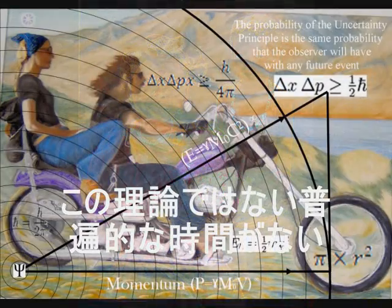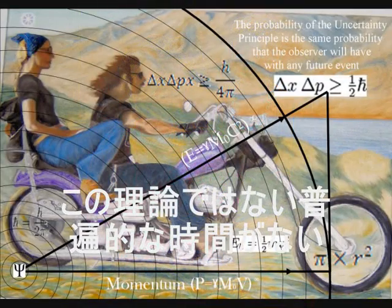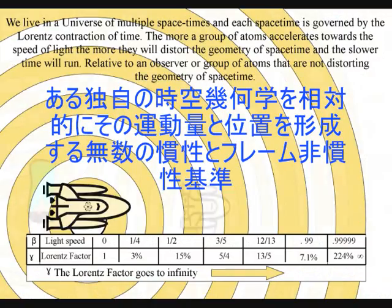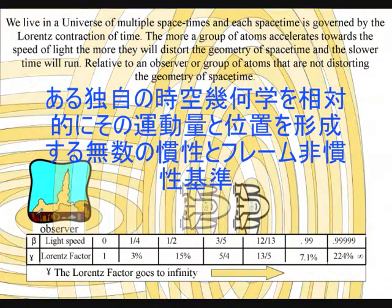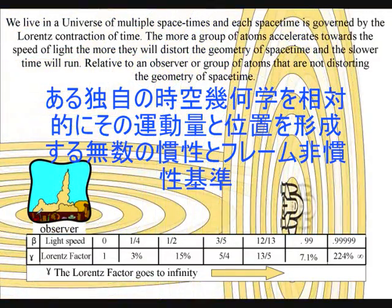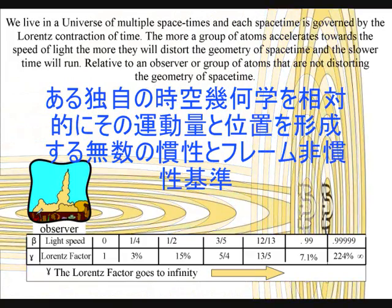In this theory there is no universal time, because the universe is made up of an infinite number of reference frames that have their own proper time relative to their momentum and position.